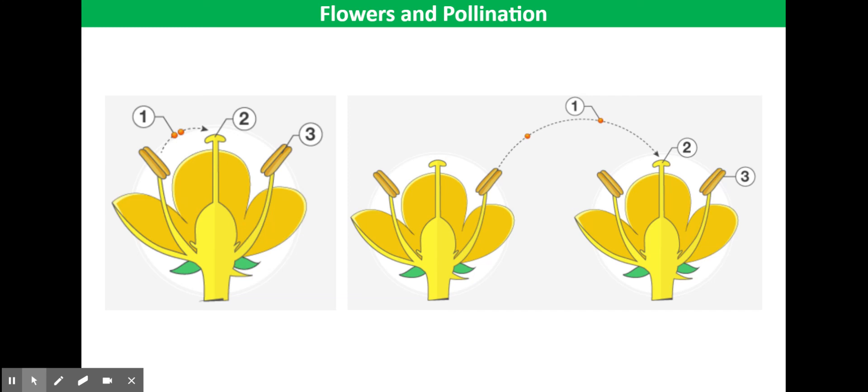An advantage of self-pollination is that the pollen grains are directly transferred onto the stigma of the flower. You don't need a pollinator.